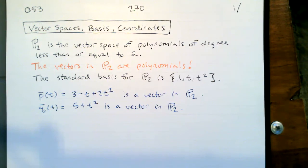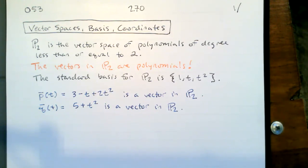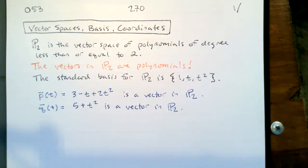This is related to your linear transformations quiz. When a linear transformation maps R3 to R2, the images — the range of T — is a bunch of vectors in R2. So they look like 2×1 matrices, two-by-one vectors. That's what things look like in R2: they look like an x1 and an x2.